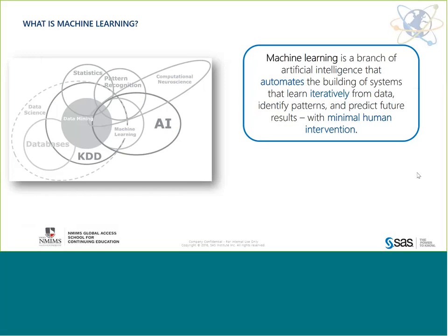Machine learning is a branch of AI. The whole idea is to generate systems or methods which can do prediction or pattern recognition with less human intervention. In business analytics, the goal is to make better business decisions using technology and available data. These algorithms learn from past data and are able to either predict the future or identify patterns that would otherwise be very difficult for a human mind to comprehend.